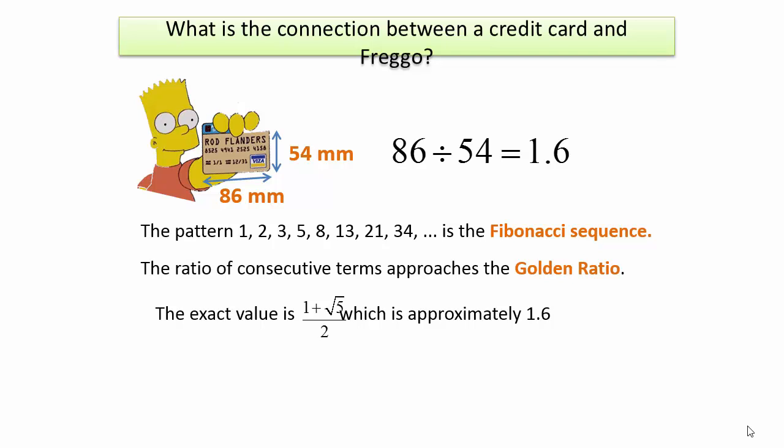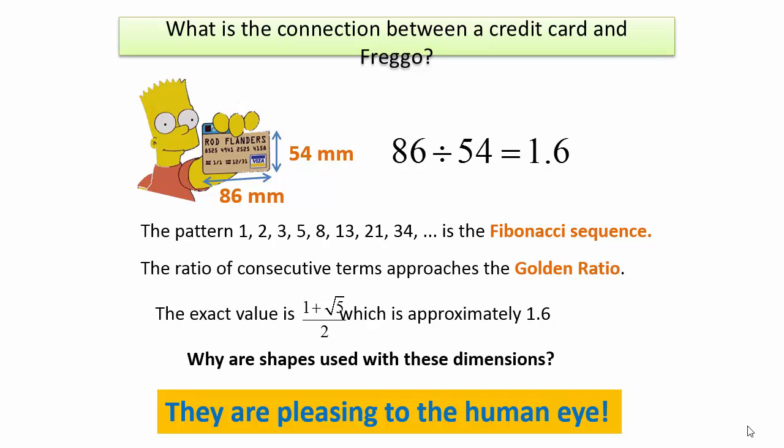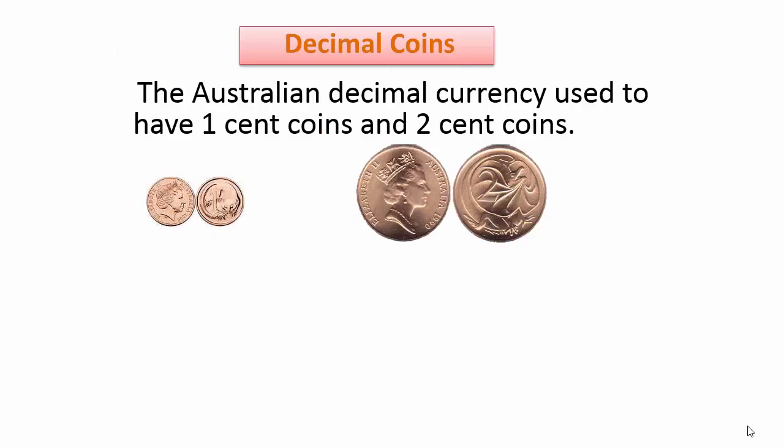But why do we use such shapes? The basic reason is that they are pleasing to the human eye. The golden ratio exists in many cases in nature, and humans have imitated its natural aesthetic property in such things as TV dimensions, credit cards, buildings, paintings, and so on.